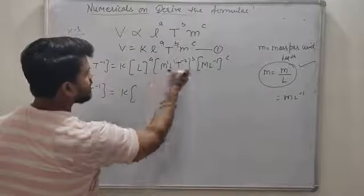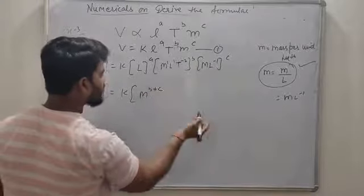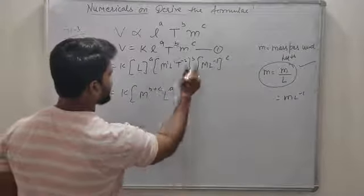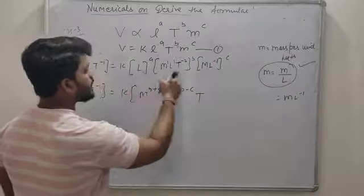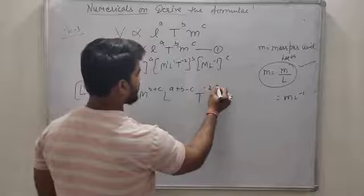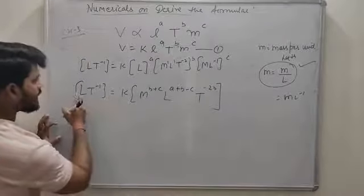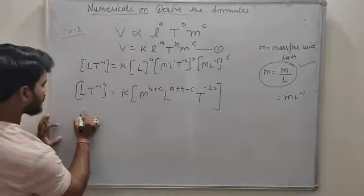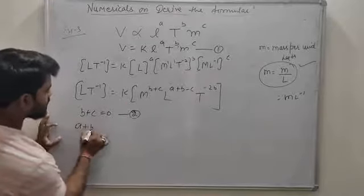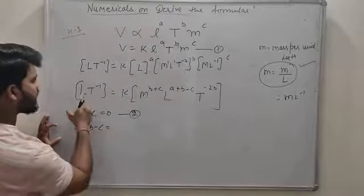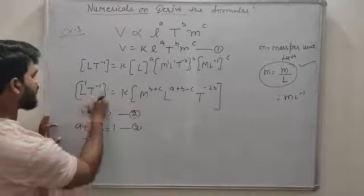M यहाँ नहीं है, M की power यहाँ B है, M की power यहाँ C है — तो B plus C। L यहाँ A है, L यहाँ B है, L यहाँ minus C है। T यहाँ नहीं है, T यहाँ minus 2B है। Compare the powers: M यहाँ 0 है, तो B plus C is equal to 0 — second equation। A plus B minus C is equal to 1 — third equation। T: minus 2B is equal to minus 1 — fourth equation।